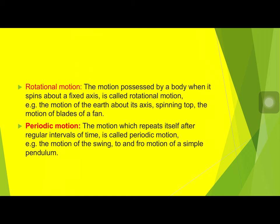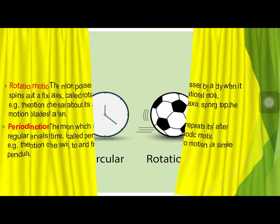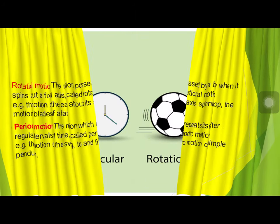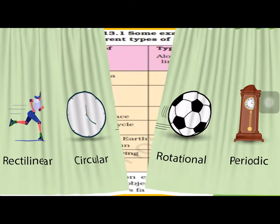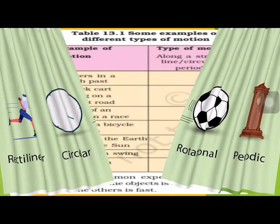Fourth is periodic motion — motion which repeats itself after a regular interval of time, like the to-and-fro motion of a swing or a pendulum. From the pictures you can see: rectilinear is running in a straight line, circular is the dial of a clock, rotational is spinning a ball on your hand, and periodic is the pendulum.